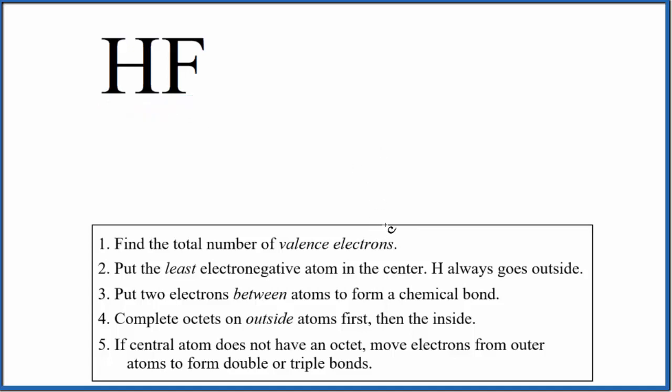The first thing we do when we draw Lewis structures for compounds like HF, we find the total number of valence electrons. So the periodic table can help us do that.